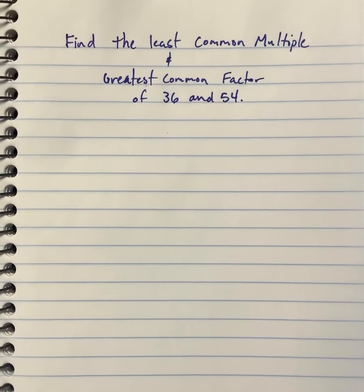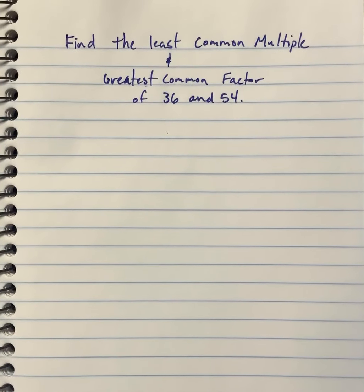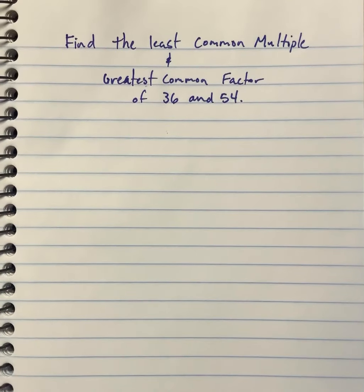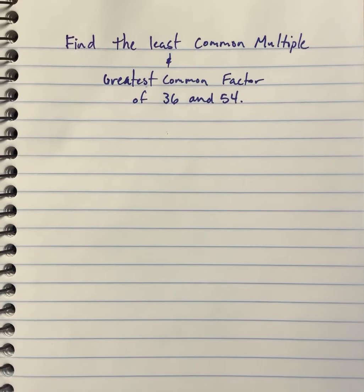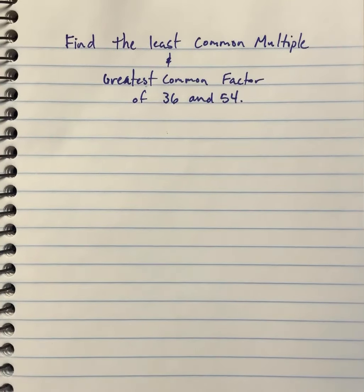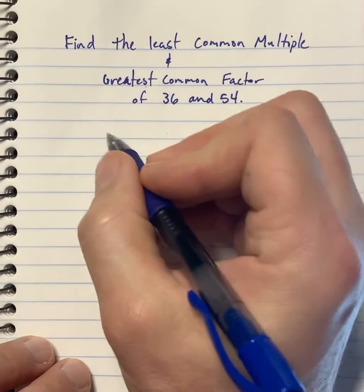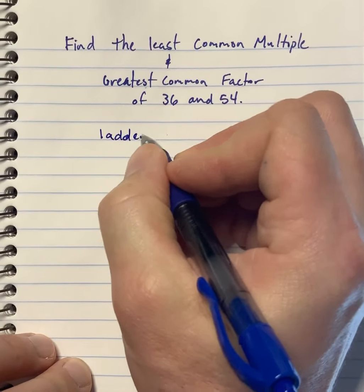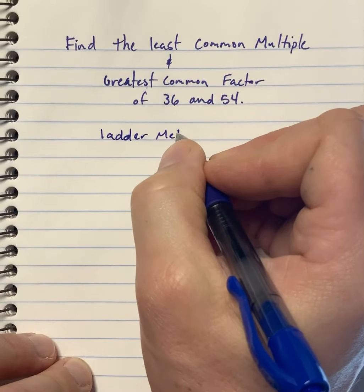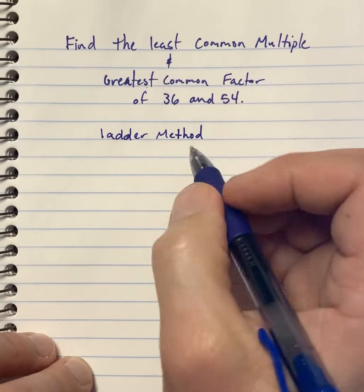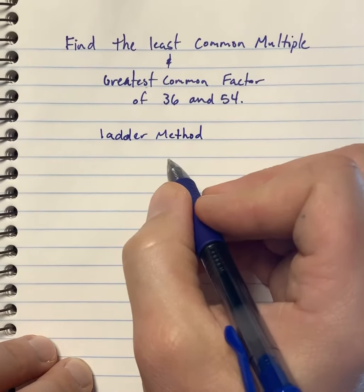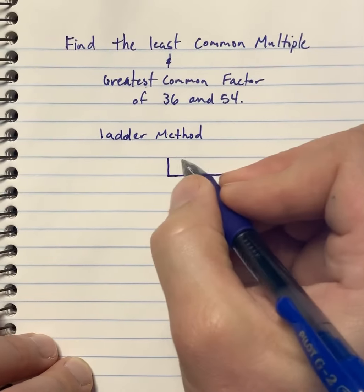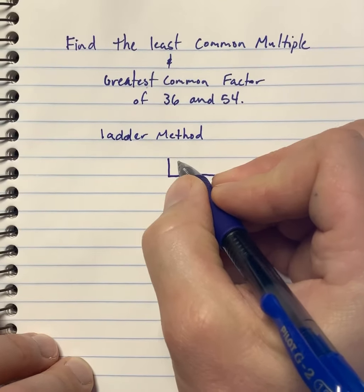I've got a great method for finding the least common multiple and greatest common factor of two numbers. Unfortunately, this method only works for two numbers, but for two numbers it works fantastic. It's called the ladder method. We're going to be taking these two numbers and putting them inside what could be considered a ladder — think of the rungs on a ladder.